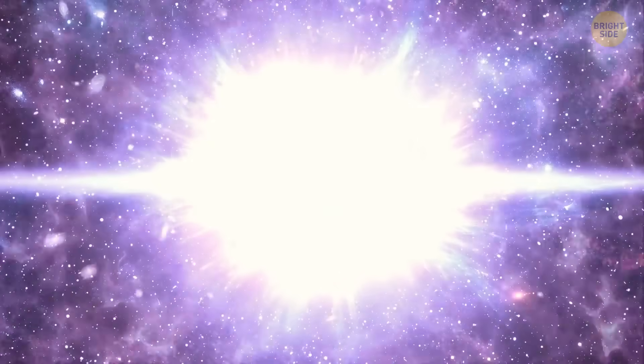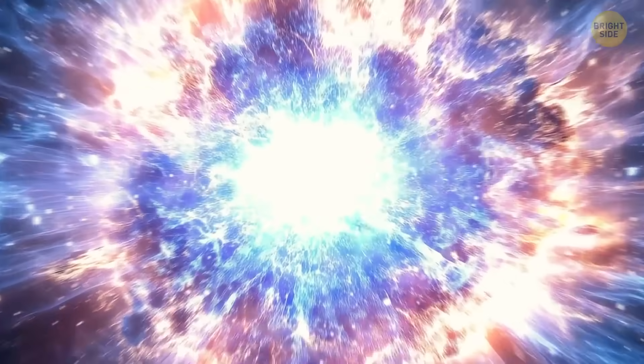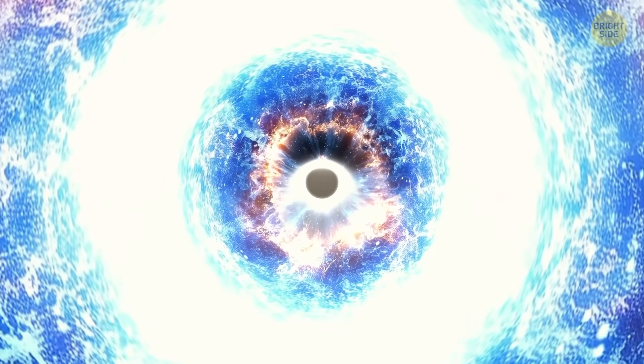Stellar black holes form when a massive star collapses in on itself. This causes a supernova, where the outer layers of the star explode into space, and the core turns into a black hole.